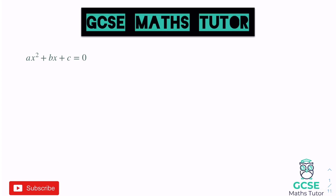Hopefully you already know what the quadratic formula looks like. It's x equals minus b, plus and minus the square root of b squared minus 4ac, all over 2a. You can already see a link between the equation on the left and the formula on the right, because we've got a's, b's, and c's in both.